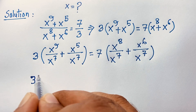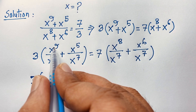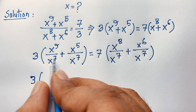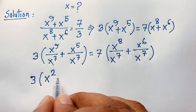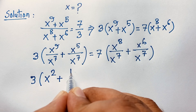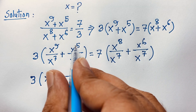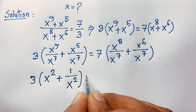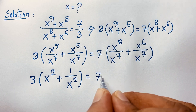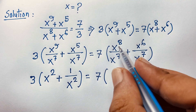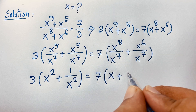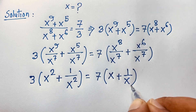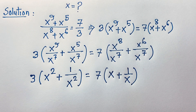Simplifying the exponents: x to the power 9 divided by x to the power 7 gives x squared (9 minus 7 equals 2). And x to the power 5 divided by x to the power 7 gives 1 over x squared. On the right side, x to the power 8 over x to the power 7 is x, and x to the power 6 over x to the power 7 gives 1 over x. So we have x squared plus 1 over x squared.